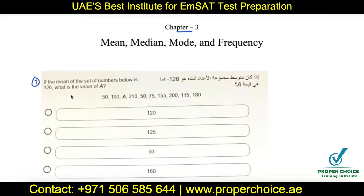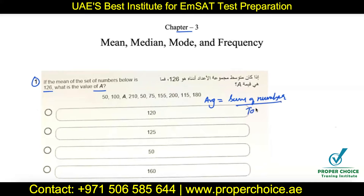Question one: if the mean of the set of numbers below is 126, what is the value of 'a'? The mean, also called the arithmetic mean or average, equals the sum of all values divided by the total count. So we write: 126 equals the sum of all the numbers divided by how many there are in total.